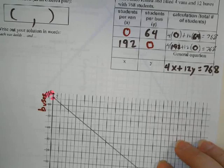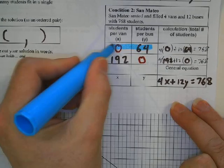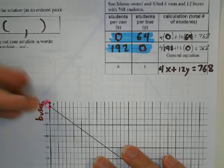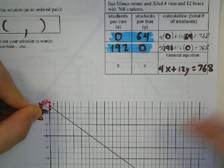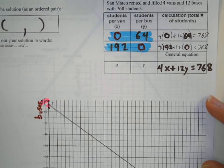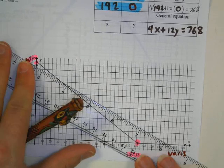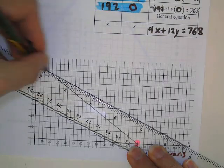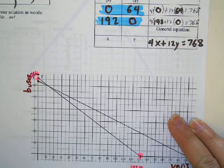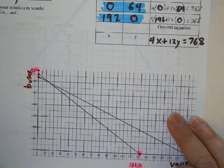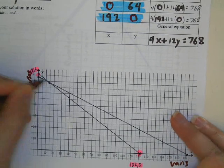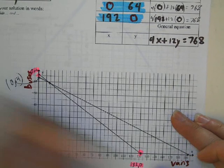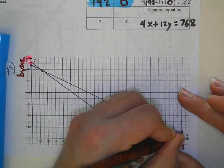Now I need to plot these points here. I got zero 64 and 192 comma zero. So I'm going to plot those points. Zero 64 is going to be down here, and 192 is going to be over here, so I'm going to connect them. This one here was zero 64, and this here was 192 comma zero.